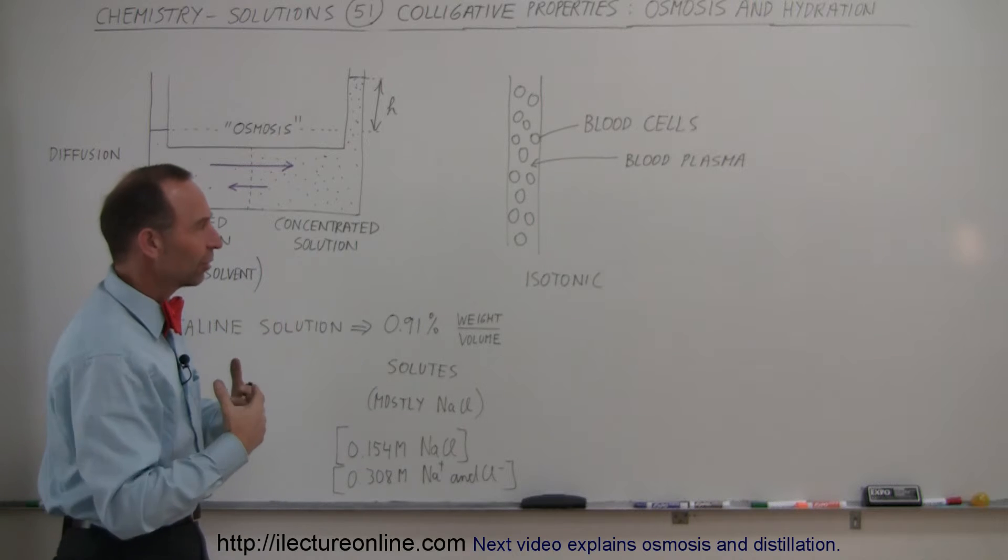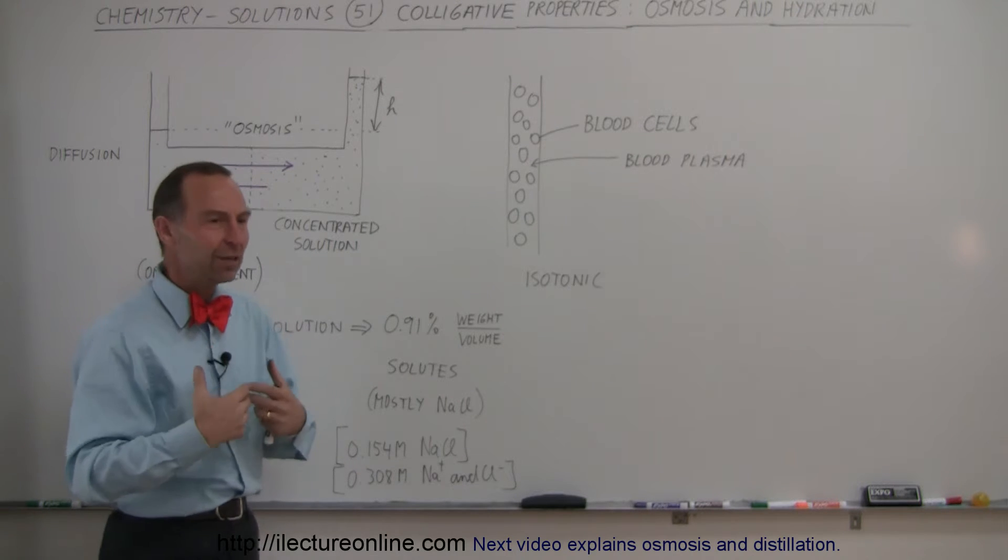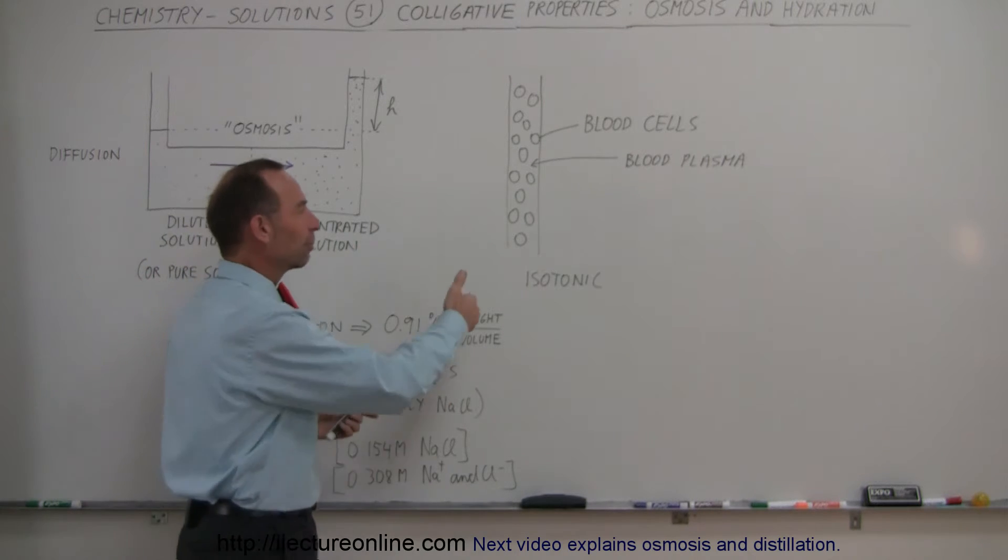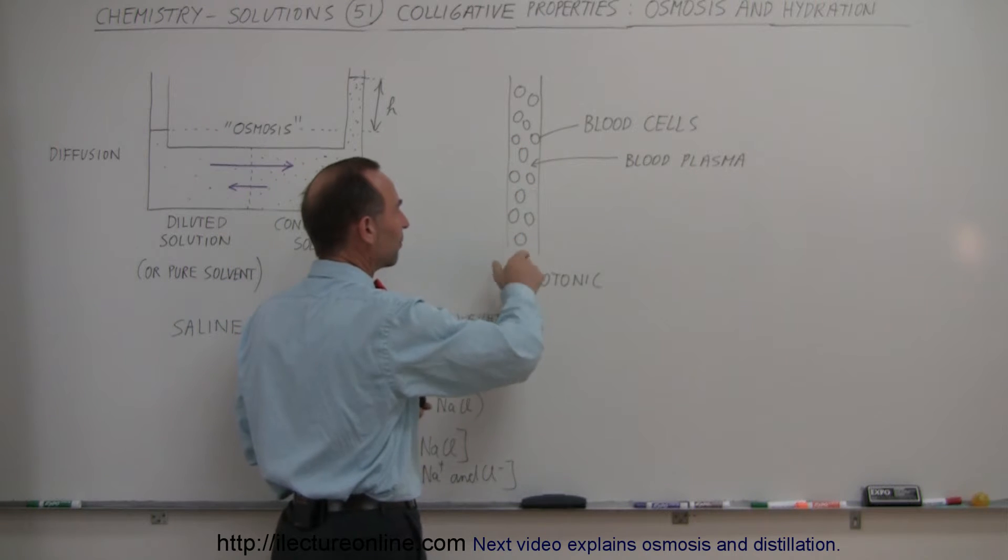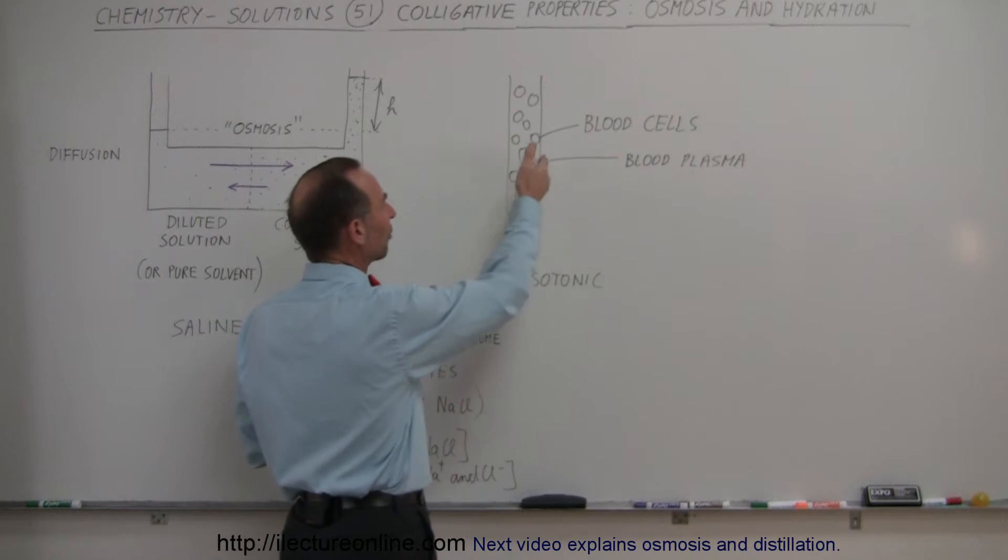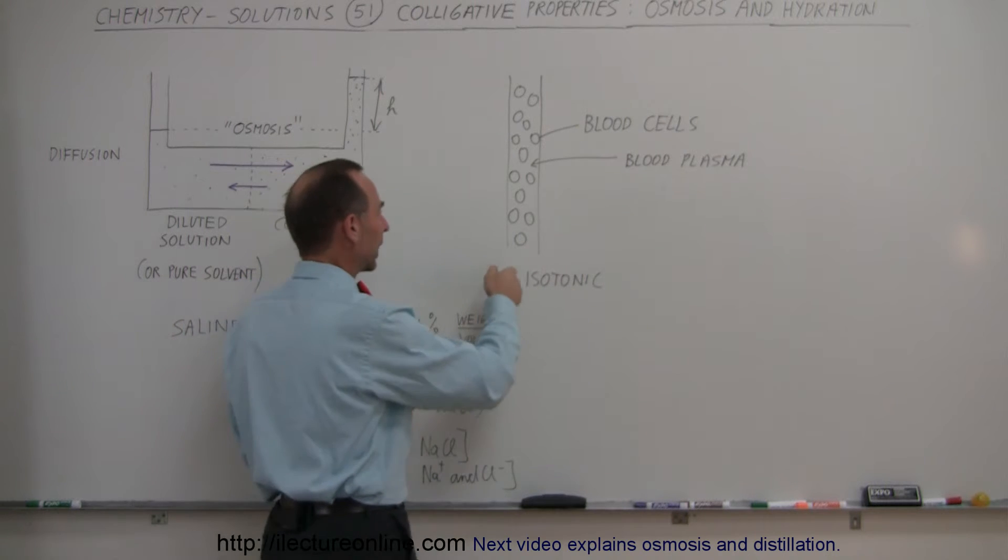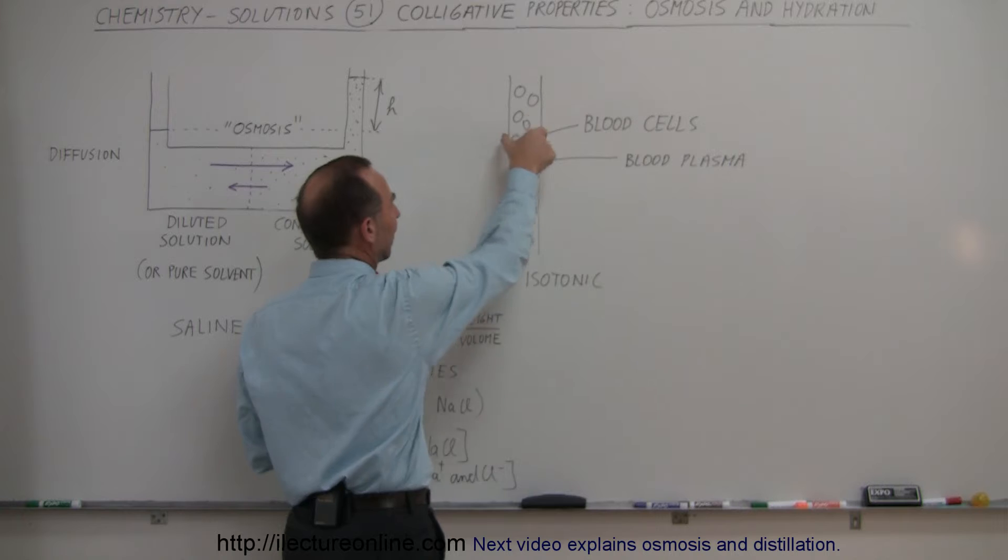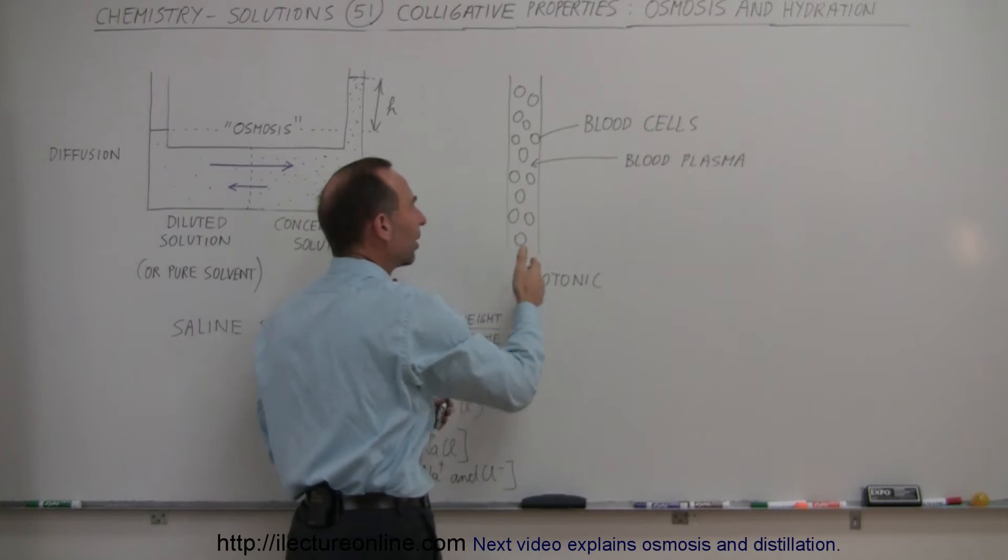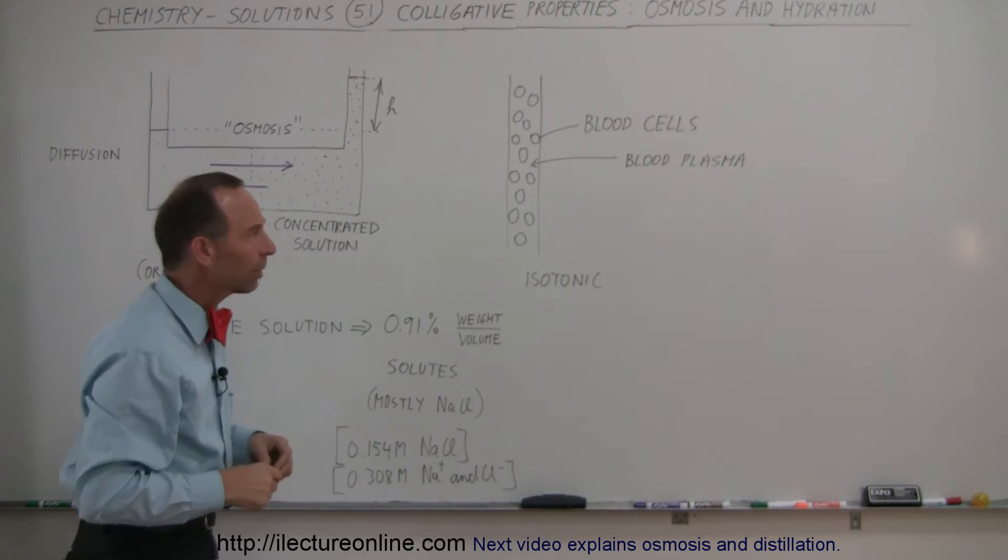Our body is filled with capillaries, veins, and arteries that carry blood through every aspect of our body. If you look at a typical artery, vein, or capillary, it's a tube-like container that has blood plasma in it and the blood cells in the blood plasma.